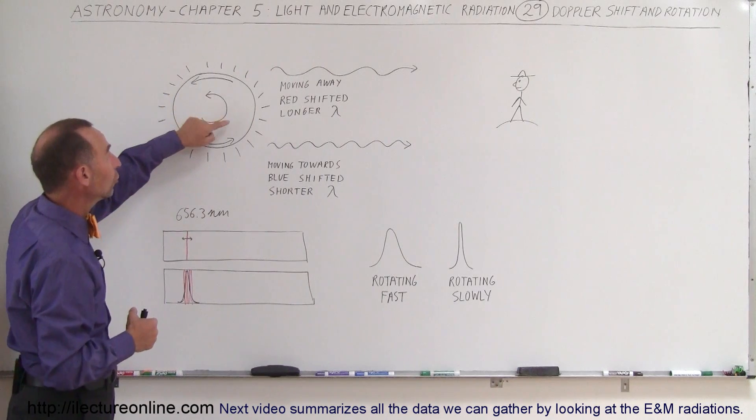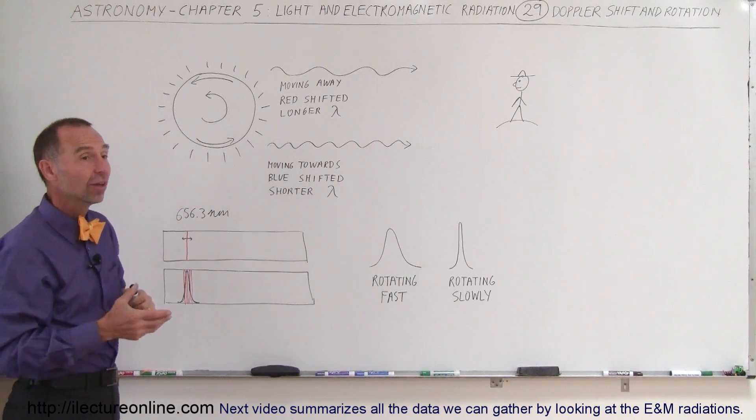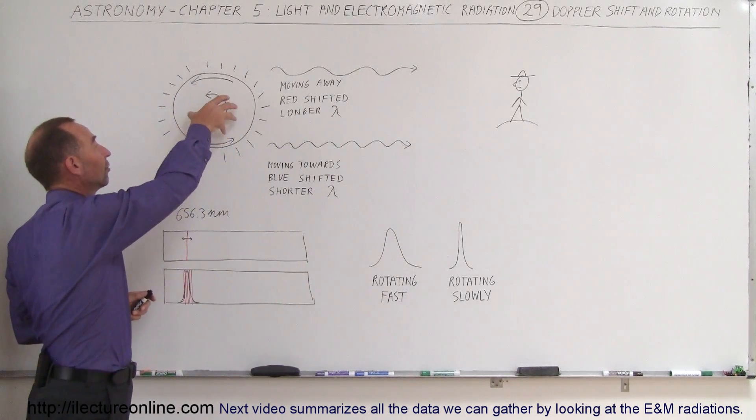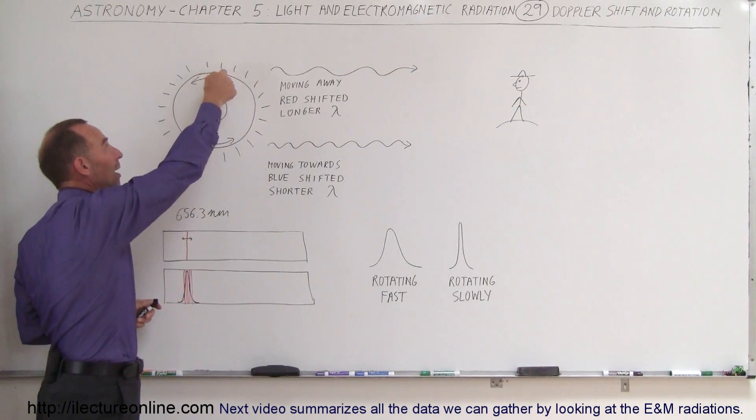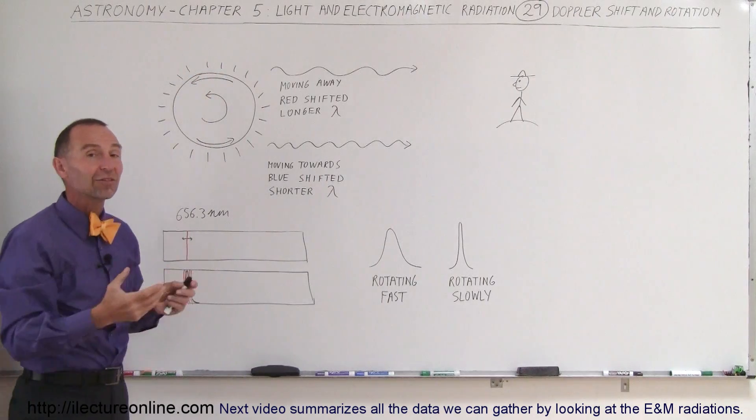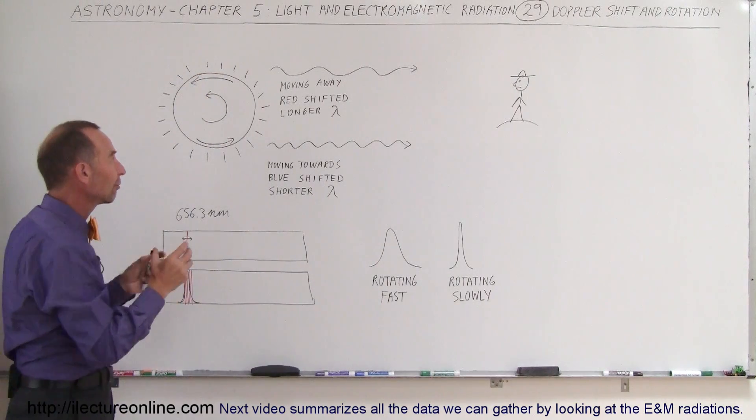Now, of course, it does depend also on how big the object is. If it's a very slow rotating object, but it's a very big object, then of course the edges of the object will appear to be moving faster than at the same rate of rotation for a smaller object.